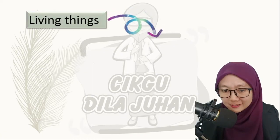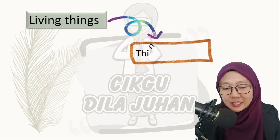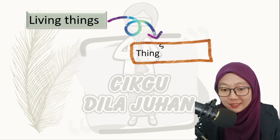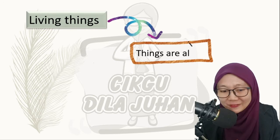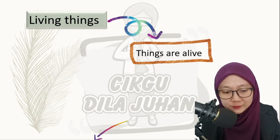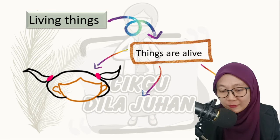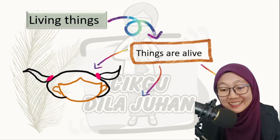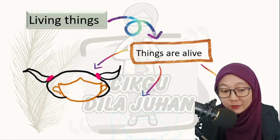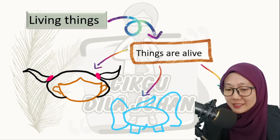Living things are things that are alive. For example, the first one — can you guess it? That is humans. The second one, that one is an elephant actually.